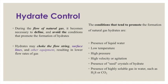During the flow of natural gas it becomes necessary to define and avoid conditions that promote hydrate formation, since hydrates may choke the flow string, surface lines, and other equipment, resulting in lower gas flow rates. The conditions that promote natural gas hydrate formation include: presence of liquid water, low temperature, high pressure, and the presence of agitation or turbulence in the system, which initiates and accelerates hydrate nucleation.